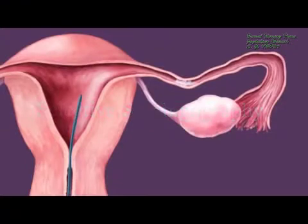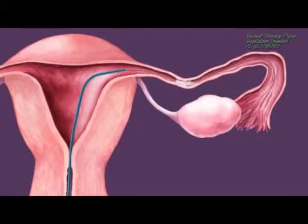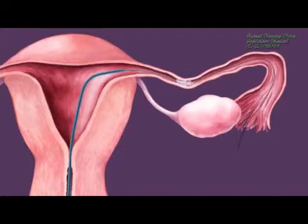When a blockage is confirmed, selective salpingography can be performed. The catheter is pushed into the os, or opening, of the blocked tube. A thin guide wire is placed through the catheter and pushed directly through the blockage and out the opened end of the fallopian tube. A small micro catheter is then fed through the first catheter and over the guide wire, out the fallopian tube.